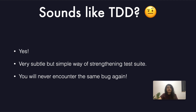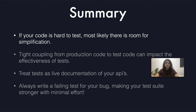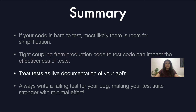After going through this cycle, does this sound like TDD? Yes, it is. But even if you don't practice TDD, I encourage you to try this — it's a very subtle but simple way of strengthening your test suite, and the best part is you will never encounter the same bug again. To summarize: code that is hard to test should be simplified. Tight coupling is almost always a bad idea. Tests should describe what is expected of the API instead of mirroring the structure of production code. Tests should be treated as live documentation of your APIs, which helps with maintenance and clarity. Always write a failing test for your bug, making your test suite stronger with minimal effort.